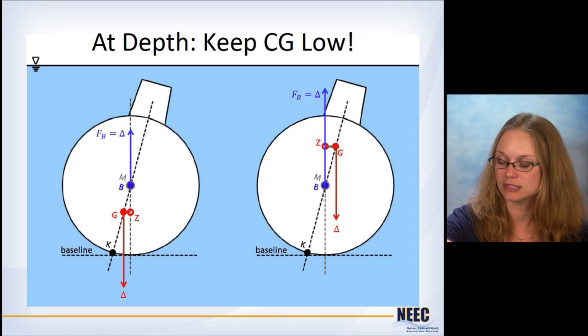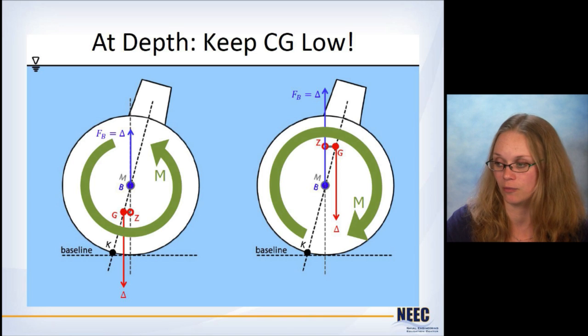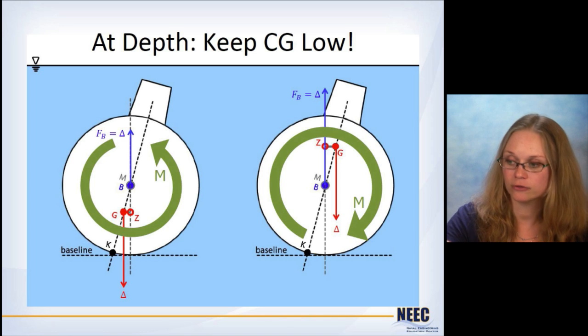The submarine on the left has a center of gravity that's below the center of buoyancy. So we tip it over, draw the arrows. The submarine on the right hand side has a center of gravity that's up high above the center of buoyancy. We draw the arrows. We get a moment.